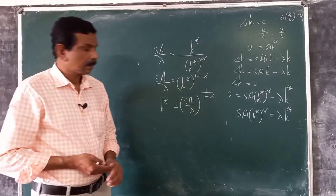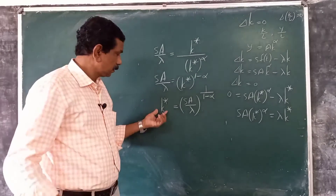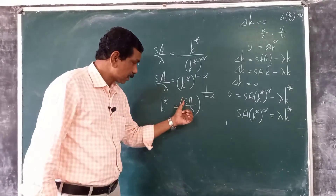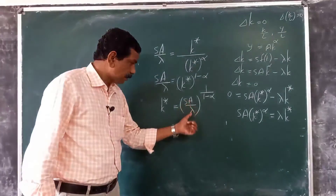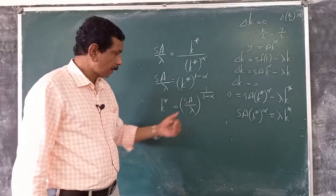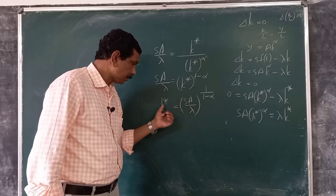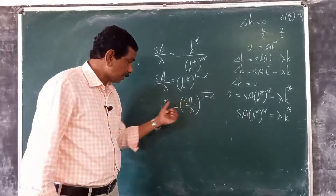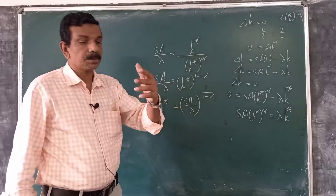The steady state capital-labour ratio depends on S, A, and λ. Here A is a measure of productivity and λ is assumed to be constant. Assuming A and λ are constant, the steady state capital-labour ratio depends on the saving rate S. As the saving rate increases, the steady state capital-labour ratio also increases.